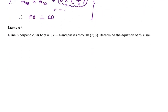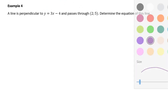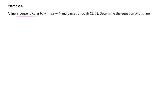Let's move on and work again with perpendicular lines. This question says a line is perpendicular to y equals 3x minus 4. You're not proving they're perpendicular — you're told they are. Really importantly, that means the gradient of this line is 3. So we need to find the gradient of the perpendicular line.